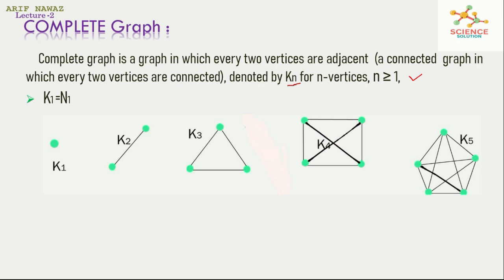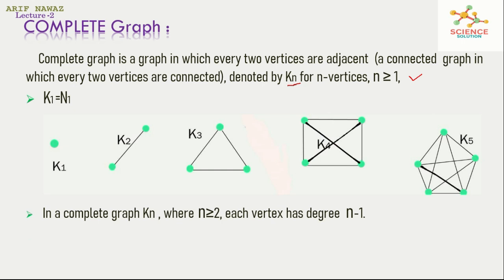A connected graph of 5 vertices in which every 2 vertices are connected is also a complete graph. In a complete graph K_n, where n is greater than or equal to 2, each vertex has degree n−1. The size of the complete graph of n vertices is equal to n(n−1)/2.